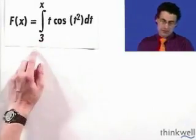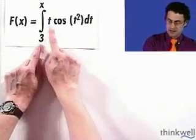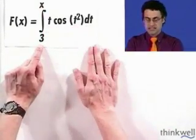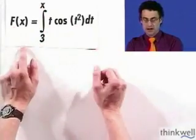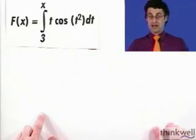Let's take a look at an example where you can sort of see this thing in action. So here's a function. Capital F of x equals the integral from 3 up to x of t cosine t squared dt. I want us to figure out the derivative of capital F of x.